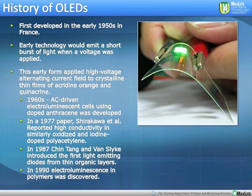A little bit of the history of OLEDs. First developed in the early 1950s as theoretical, out of Europe. Early technology would emit a short burst of light when voltage was applied to layers of materials. This early form applied a high-voltage alternating circuit AC power field, made out of available substrates at the time. In the 60s, they were able to go to AC using additional substrates and materials. By 1987, they were getting light-emitting diodes with organic layers for the first time — not that long ago, considering how deep organic LEDs are in our everyday business today.